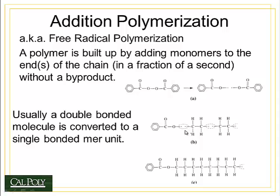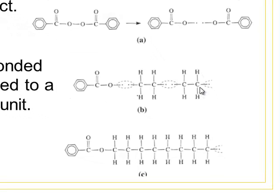The second step is the addition step. The mer units have a carbon-carbon double bond which is broken to form a single bond, exposing the extra carbon atom bonds on each side. This is bonded to the terminal group first, and then the other exposed bond is allowed to bond to yet another polyethylene mer group, and so on until you end up with a very long chain of molecules.